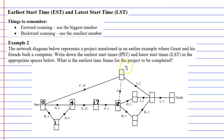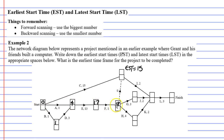Looking at the vertex up at the top, there are actually two paths we can take to get here. We can go along activity C, which takes 15 minutes — an earliest start time of 15. The other path goes through here and up through the dummy activity. There's actually more than two paths, because you're either going through activity A then up, or through activities B then D across and up. So 18 plus zero gives us 18.